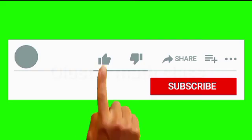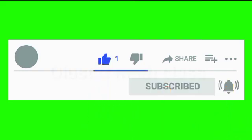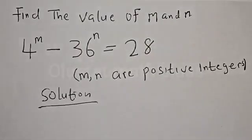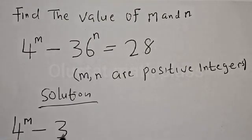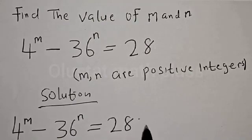But before we proceed, please don't forget to like, share, comment and subscribe. Thank you. Solution: we have the given equation 4 raised to power m minus 36 raised to power n is equal to 28.